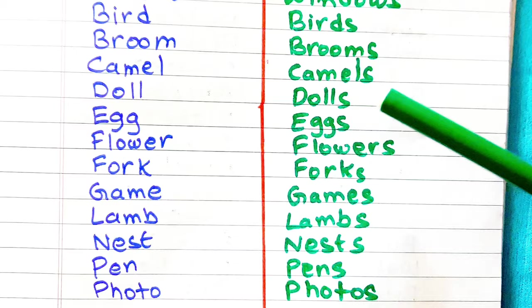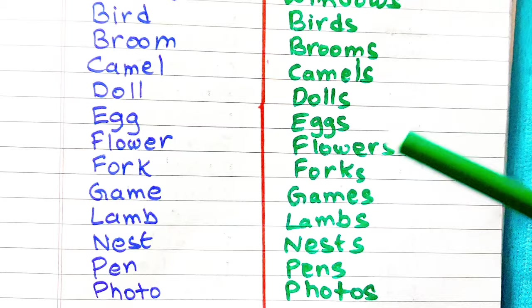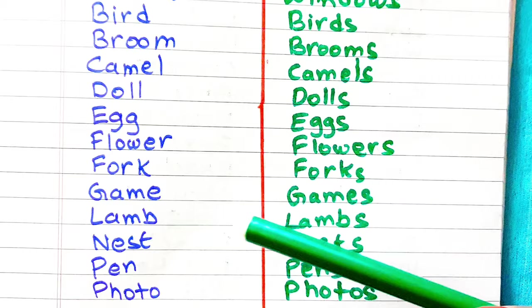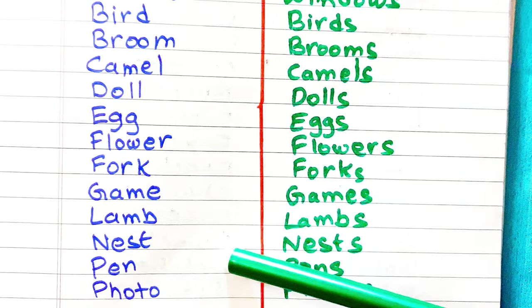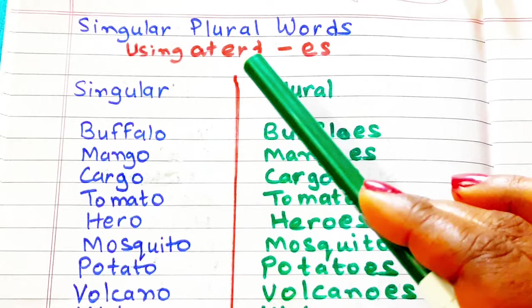Camel, camels. Doll, dolls. Egg, eggs. Flower, flowers. Fork, forks. Game, games. Lamb, lambs. Nest, nests. Pen, pens. Photo, photos.